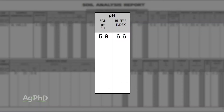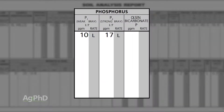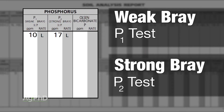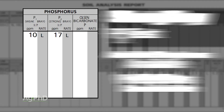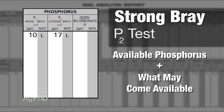With acidic soil, the soil pH will be less than 7. When the soil pH is less than 7, what we like to see for a phosphorus test is the Bray test. There are two different types — a weak Bray, also called the P1 test, and a strong Bray, also called the P2 test. The P1 tells you available phosphorus — phosphorus that's sitting in your soil ready to go today. The P2, or strong Bray, tells you what else is in the soil that may be available in the next year or the year after that. It's more of a measurement of total soil phosphorus — not complete total, but certainly a lot more than what's available today.